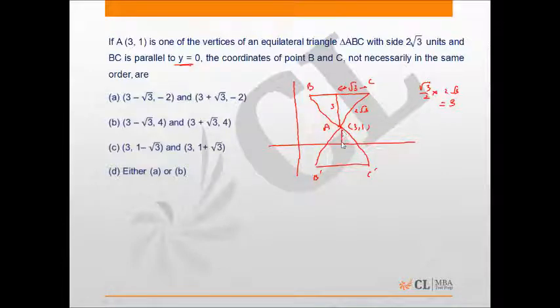So similarly, this will be 3, and because this is 1, this will be 2, and this will be again √3. So coordinates of C will be 3 + √3, comma 1 + 3, which is 4.